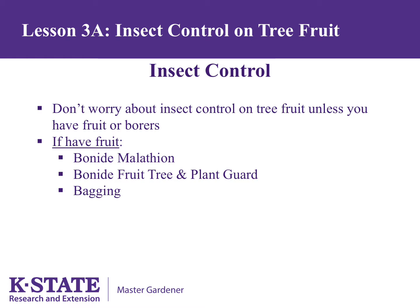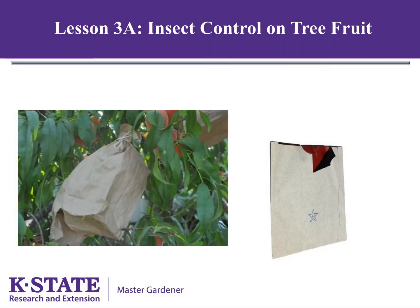Another method of controlling insects is bagging. These are two examples of bags that can be used. The one on the left is a lunch bag, also known as a three-pound bag. The lunch bags are cut back to six inches long and a slit is cut to allow the bag to be pulled over the fruit, then pleated and tied shut. The bag on the right is known as a Japanese apple bag and already has a slit and a built-in twist tie, making it more convenient to use.